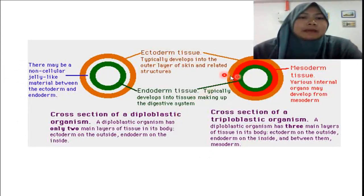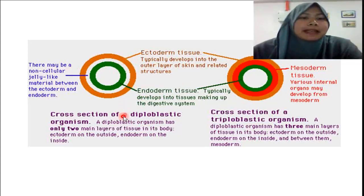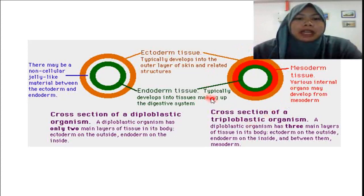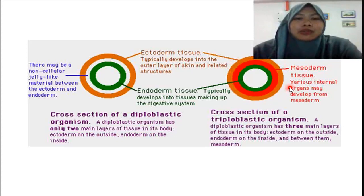This picture differentiates diploblastic and triploblastic. You can see that diploblastic only has two layers of tissue — the ectoderm and the endoderm — with the middle layer filled with jelly substances. This other diagram shows the cross-section of a triploblastic organism, which has three layers of tissue: the ectoderm, mesoderm, and also endoderm layer.